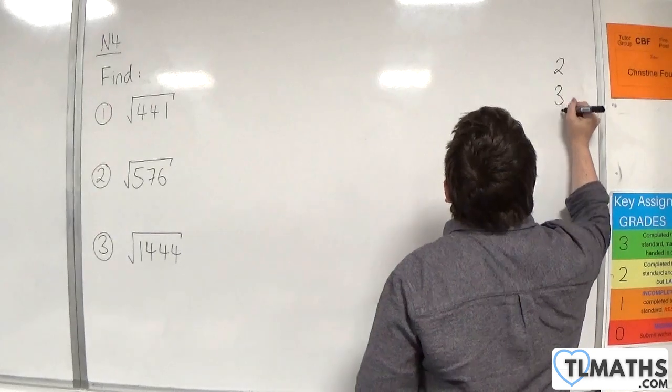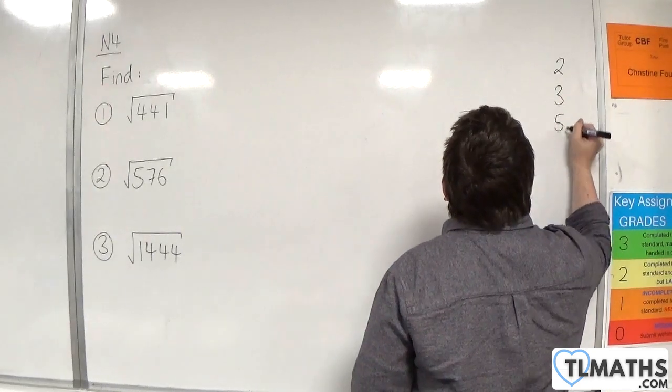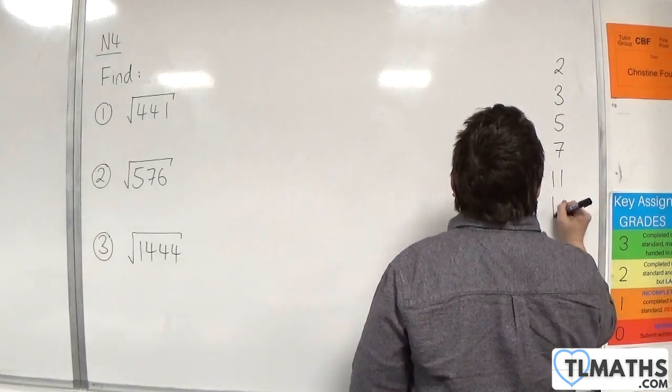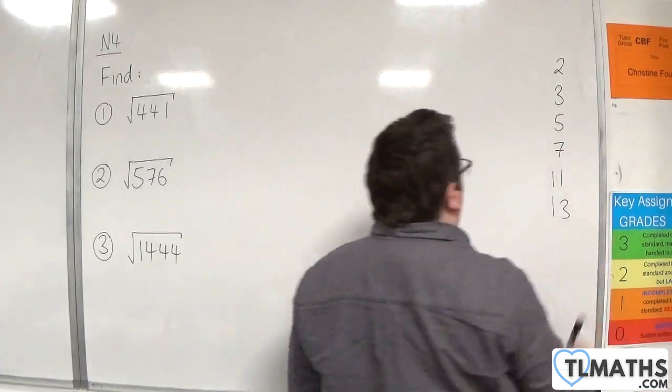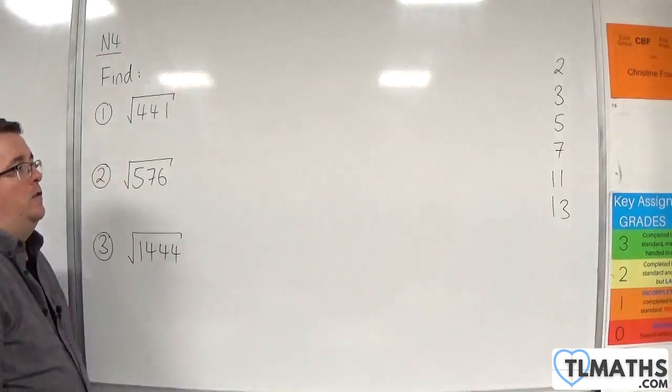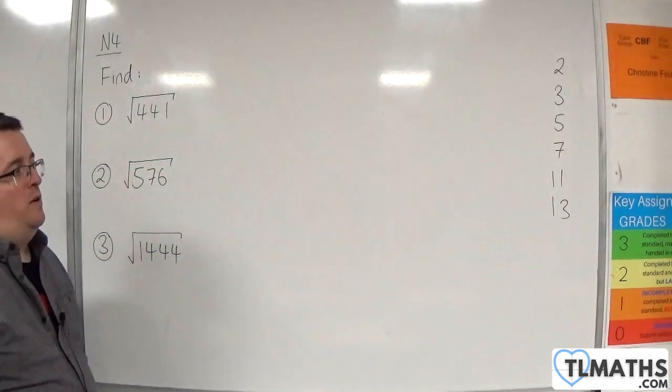So: 2, 3, 5, 7, 11, and 13. Really good practice to just keep on writing down your prime numbers.